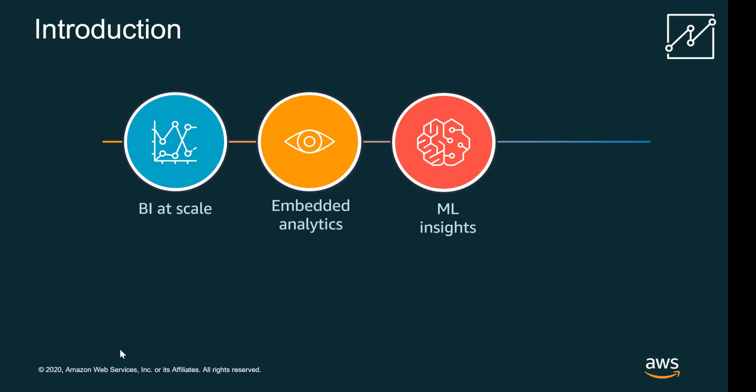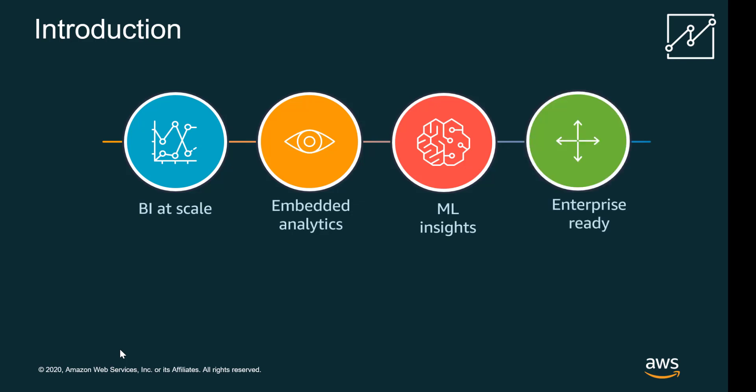Amazon QuickSight also gives you some new capabilities such as ML Insights. We have our new Q-Bar where you can interact with your data using natural language. And we also have anomaly detection. All of these are available out of the box and you don't have to do any sort of modification to use them. Last but not least, Amazon QuickSight is enterprise ready. With Amazon QuickSight you don't have to worry about infrastructure — it scales for you, it is secure, and it takes care of all your enterprise needs when you want to have business intelligence in your applications or for your end users.